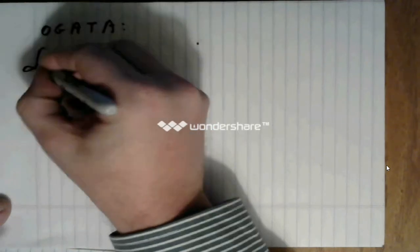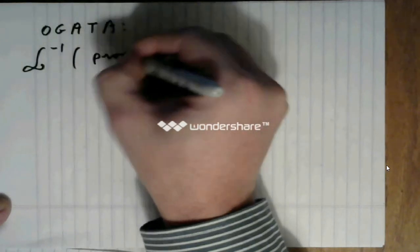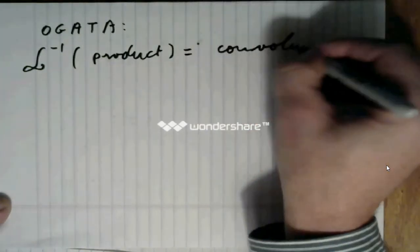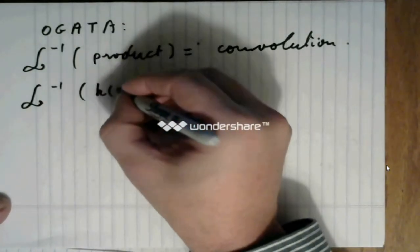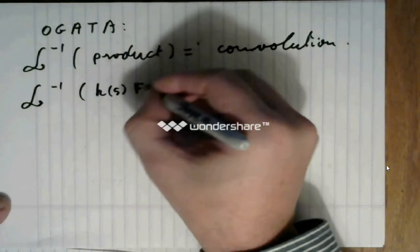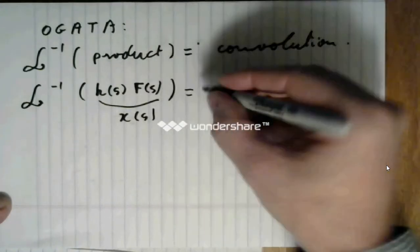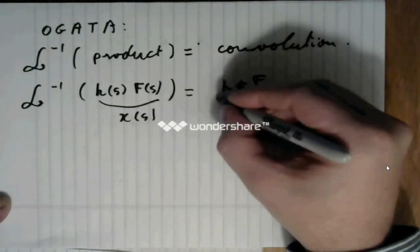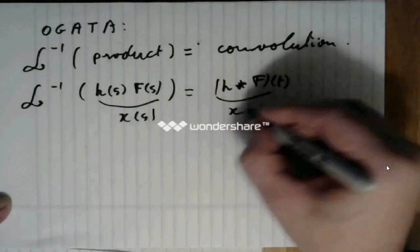You know that the Laplace transform, or the inverse Laplace transform of a product is a convolution. So the inverse Laplace transform of h of s times f of s, which is x of s, is the convolution of h and f, which is a function of time, and which is x of t.